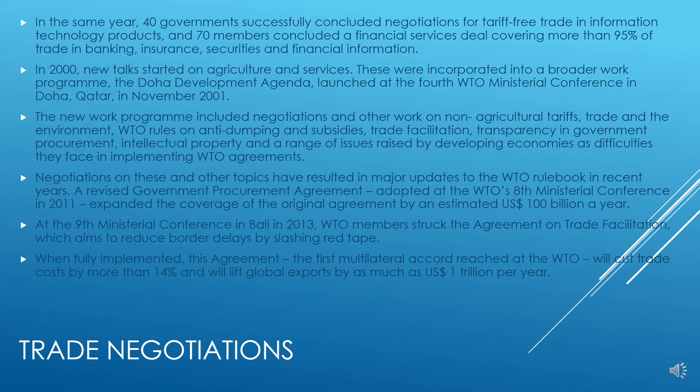At the ninth Ministerial Conference in Bali in 2013, WTO members struck the Agreement on Trade Facilitation, which aims to reduce border delays by slashing red tape. When fully implemented, this agreement — the first multilateral accord reached at the WTO — will cut trade costs by more than 14% and will lift global exports by as much as 1 trillion US dollars per year.